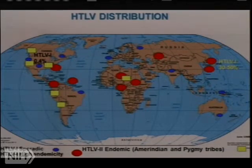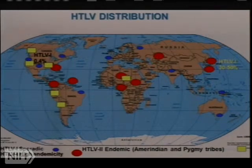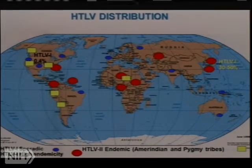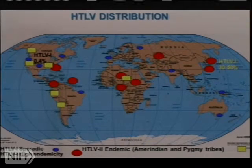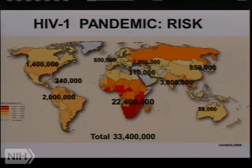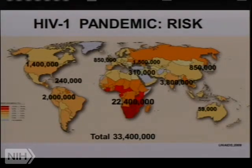It's good to know, especially because one of the diseases HTLV causes is a neoplastic one. Here's the HIV distribution, and as you can see, it's not uniform. Neither are the risk factors. So here in Eastern Europe and Central Asia, intravenous drug use is close to seventy percent of all the people who get HIV, whereas in South Asia, commercial sex work constitutes about fifty percent.